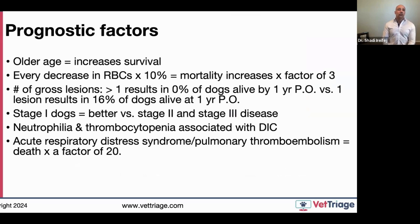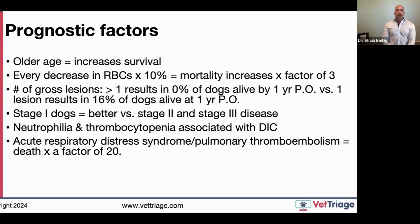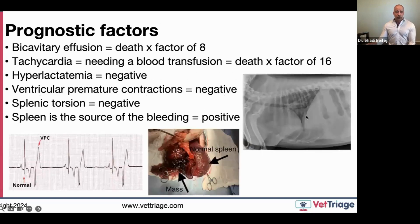Prognostic factors: interestingly, older age may actually increase survival. Severity of anemia affects mortality. Number of lesions matters — with more than one lesion, no dogs are alive at one year, versus 16 percent alive at one year with a single lesion. Higher stage, high neutrophil count, and low platelets are associated with worse outcomes. Respiratory complications such as ARDS or pulmonary thromboembolism substantially increase death.